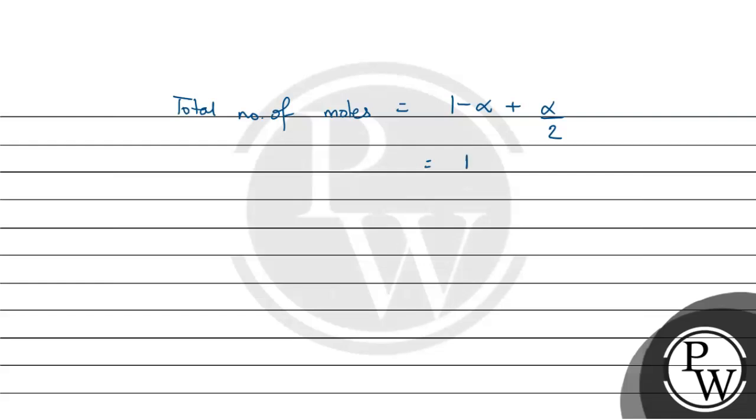Van't Hoff factor's formula is observed molecular mass upon calculated molecular mass.